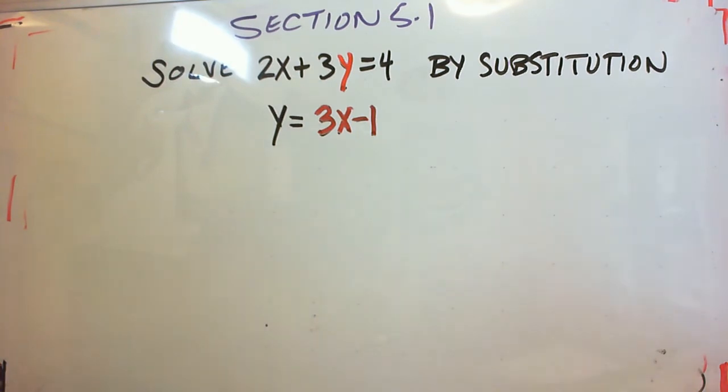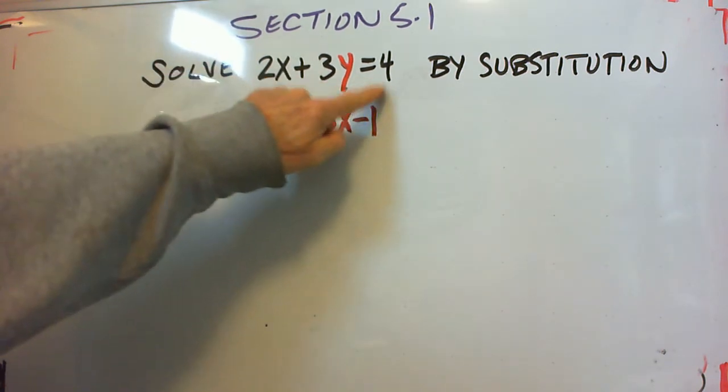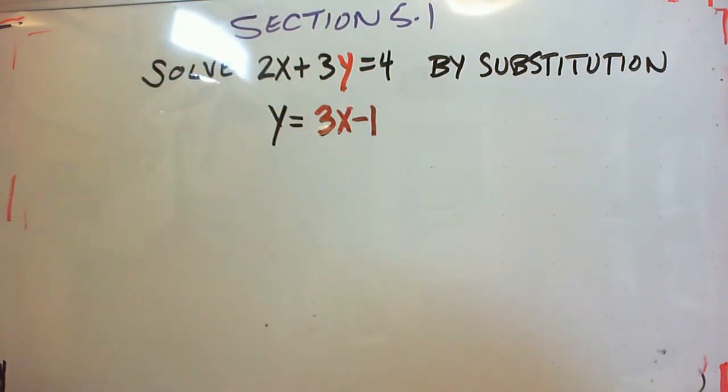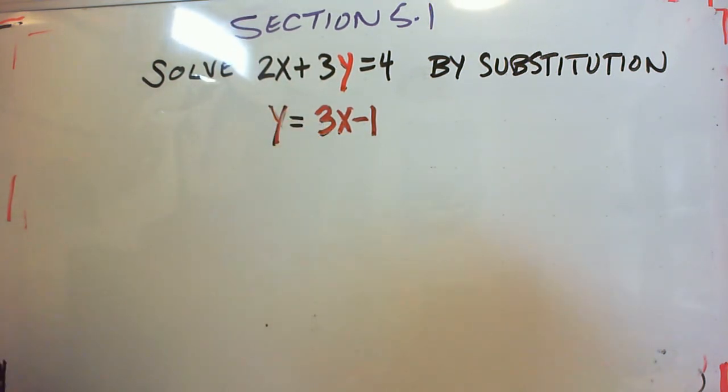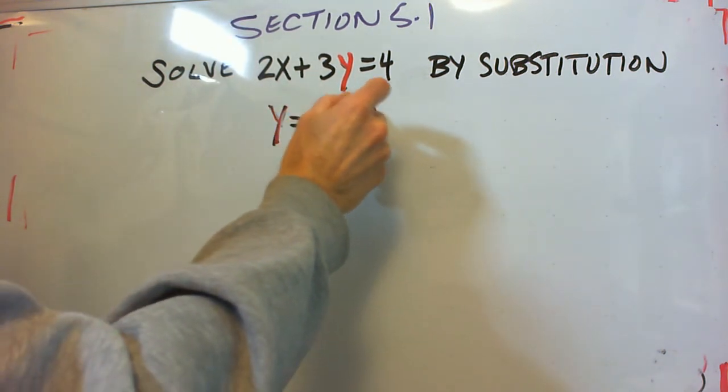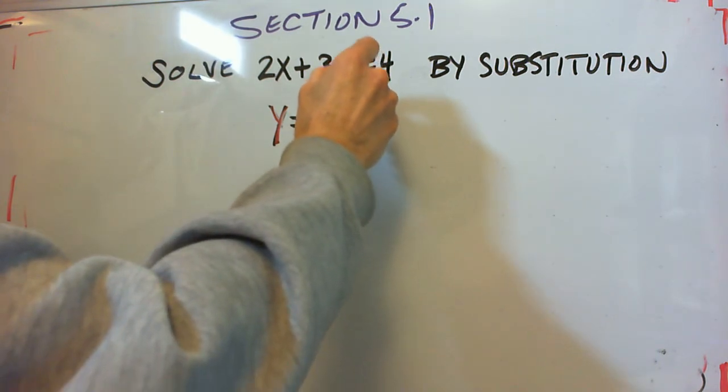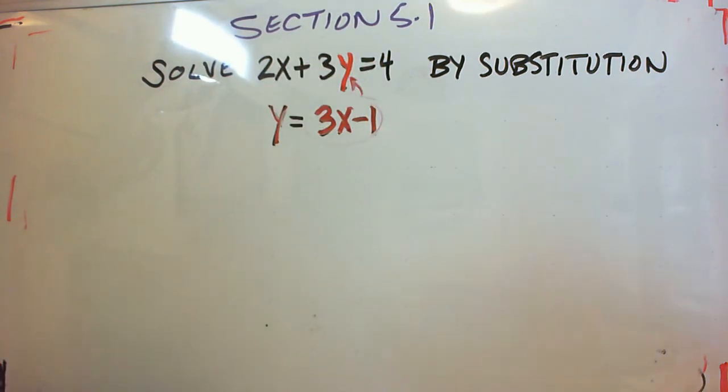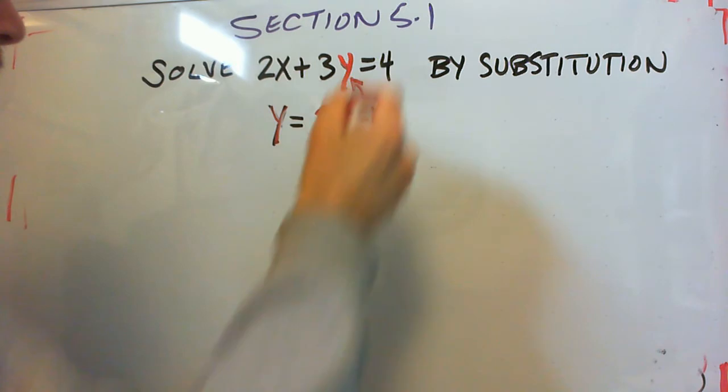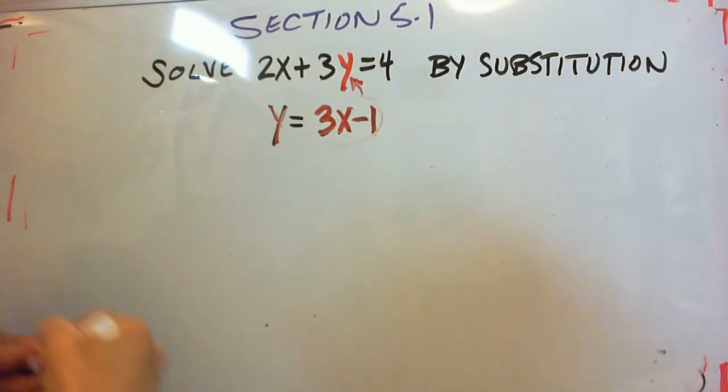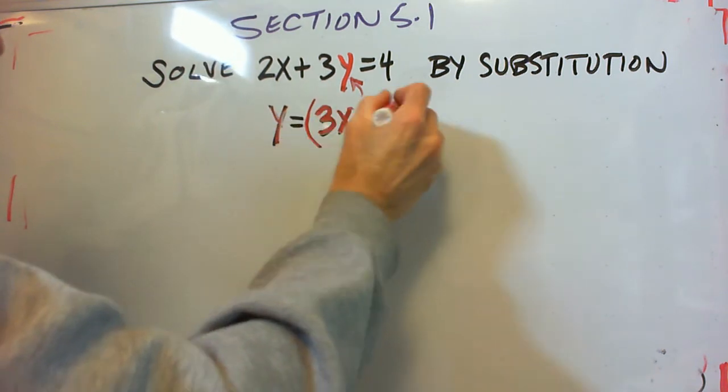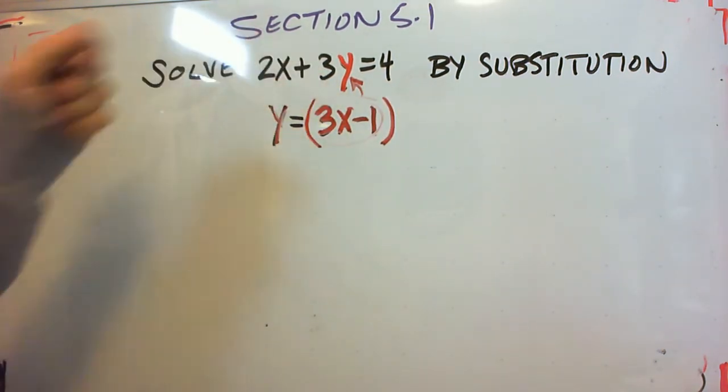Next problem. Solve the system 2x plus 3y equals 4, y equals 3x minus 1. So here we're going to plug in the 3x minus 1 for the y in the second equation. And the only difference here is you're going to have to put parentheses around that 3x minus 1 and then distribute by this 3.